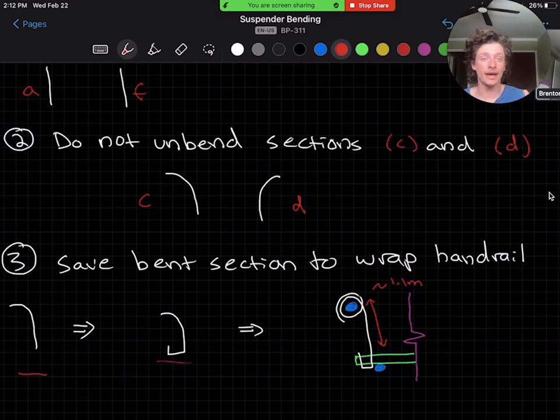So we avoid unbending each piece of rebar and then bending it again to wrap around the handrail, which, as I said before, would decrease the ductility of the material and make it more susceptible to sudden failure.